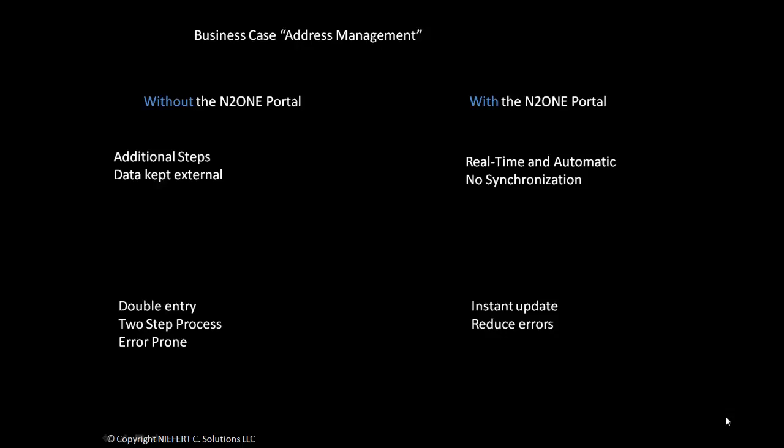It's a two-step process and there can be errors — such as if your e-commerce crashes, you lose all those addresses that have been entered by the customer. Now with the End-to-One Portal, this is all in real time and automatic. There is no extra synchronization, so your addresses are updated instantly in your database, therefore reducing the errors that you would have.